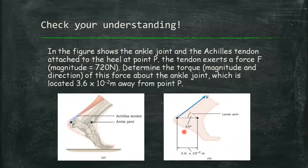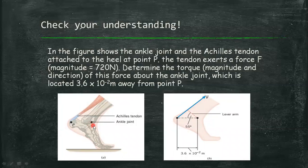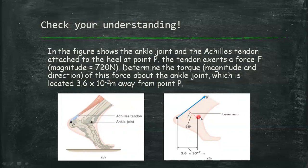Try to solve this problem. In the figure shows the ankle joint and the Achilles tendon attached to the heel at point P. The tendon exerts a force F. In figure B, the force F is along this direction with the magnitude of 720 newton. Determine the torque, the magnitude and direction of this force about the ankle joint, which is located 3.6 times 10 raised to negative 2 meter away from point P. This is the length between the ankle joint and the Achilles tendon.